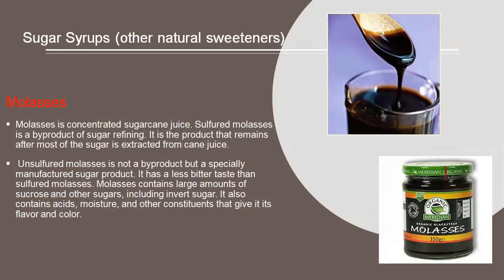Sulfured molasses is a byproduct of sugar refining. It is the product that remains after most of the sugar is extracted from cane juice. Unsulfured molasses is not a byproduct but a specially manufactured sugar product. It has a less bitter taste than sulfured molasses. It contains a large amount of sucrose and other sugars including invert sugar. It also contains acid, moisture, and other constituents that give it its flavor and color.